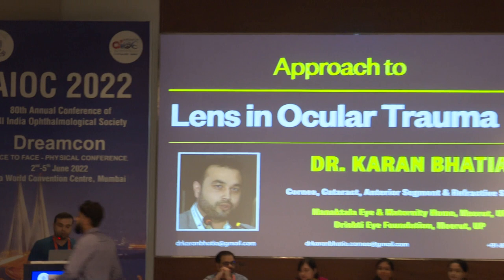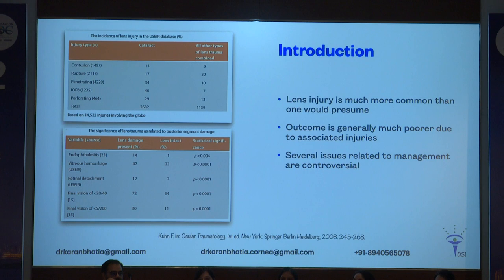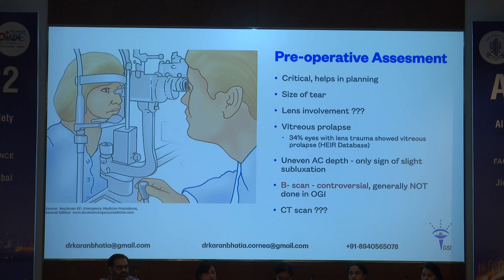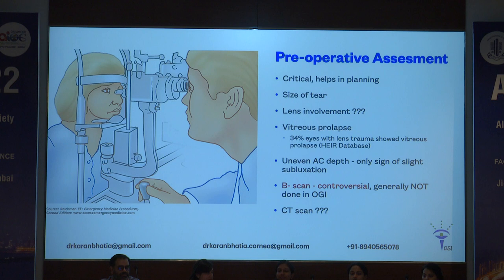I'm a cornea and refractive surgeon. Lens injury is much more common than one would presume and the outcome is generally much poorer due to associated injuries. There are a lot of issues which are controversial or debatable regarding its management. The preoperative assessment becomes extremely critical to assess the size of the tear, whether the lens is involved or not, vitreous prolapse, and uneven AC depth is sometimes the only sign of subluxation.